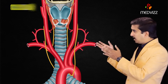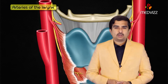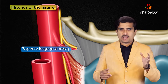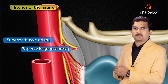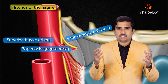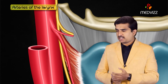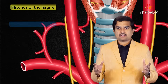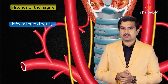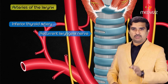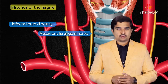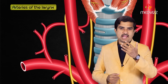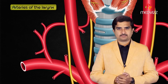The arteries of the larynx include the superior laryngeal artery, a branch of the superior thyroid artery, which travels with the internal laryngeal nerve. The inferior laryngeal artery is a branch of the inferior thyroid artery and travels along with the recurrent laryngeal nerve. This concludes the discussion on the anatomy and physiology of the larynx.